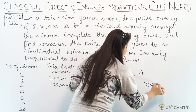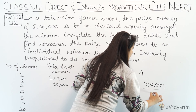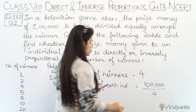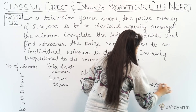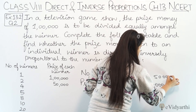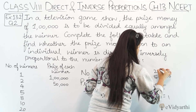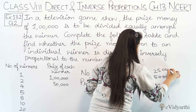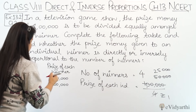1 lakh ko divide karoge 4 se — right? So, 1,00,000 ÷ 4 = 25,000. Hmare paas aa gaya 25,000. So agar 4 logon mein distribute hoga, to har ek ko 25,000 milega.